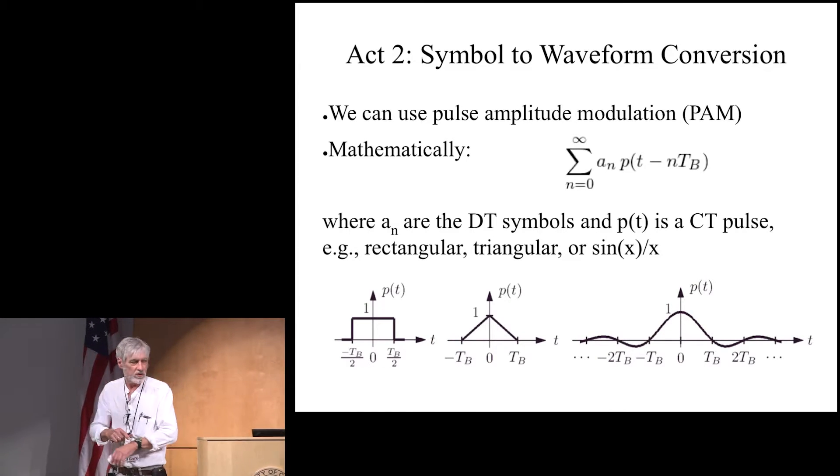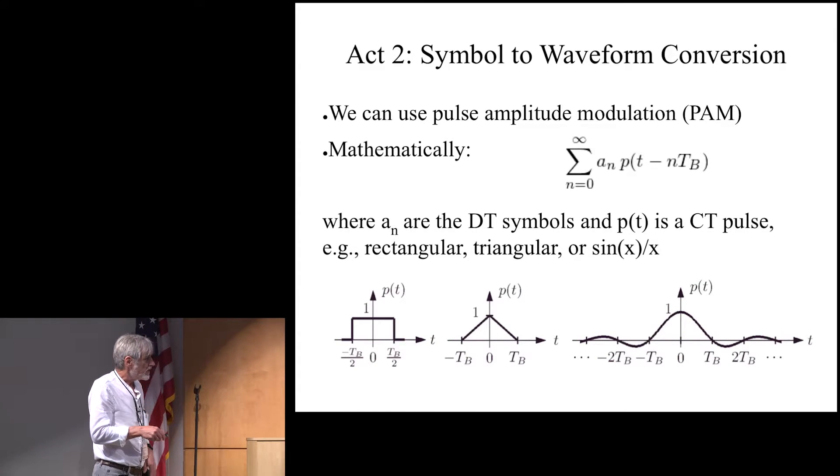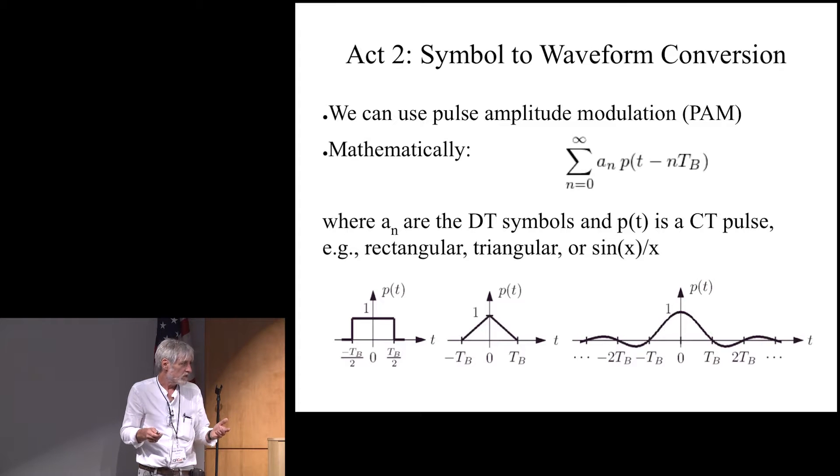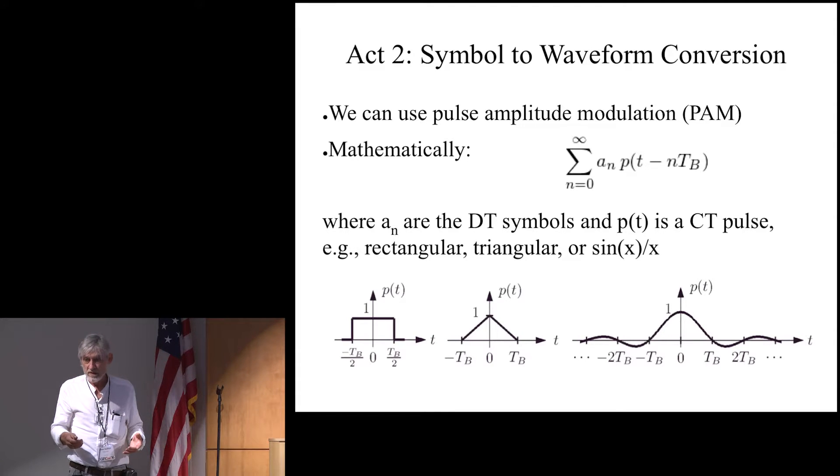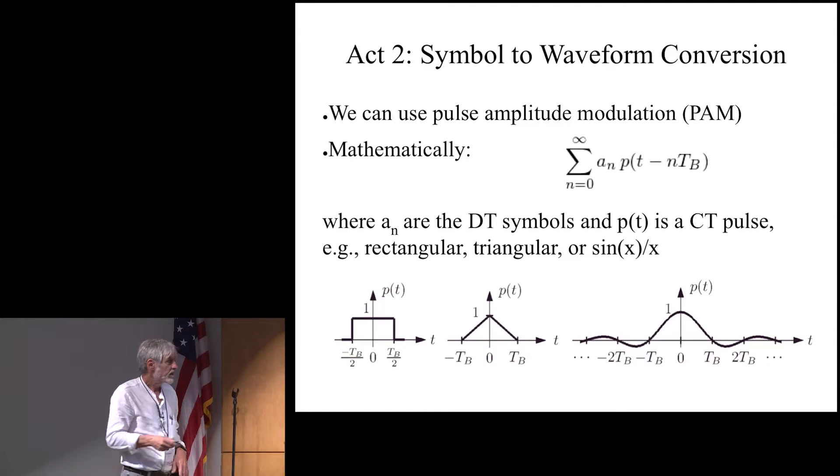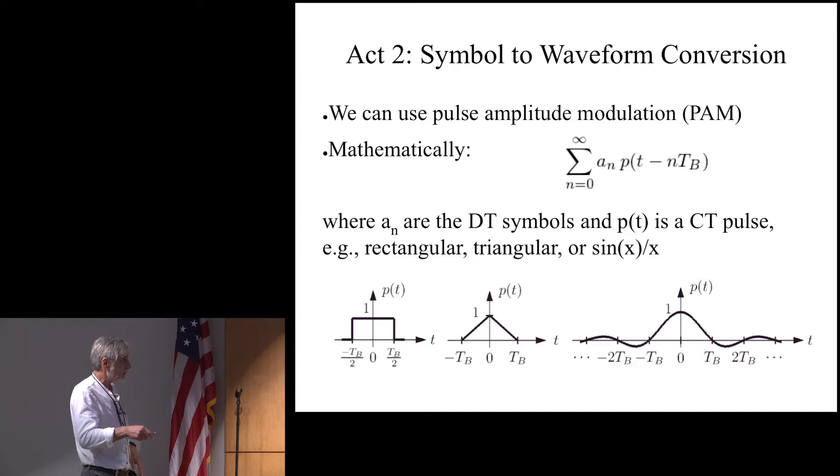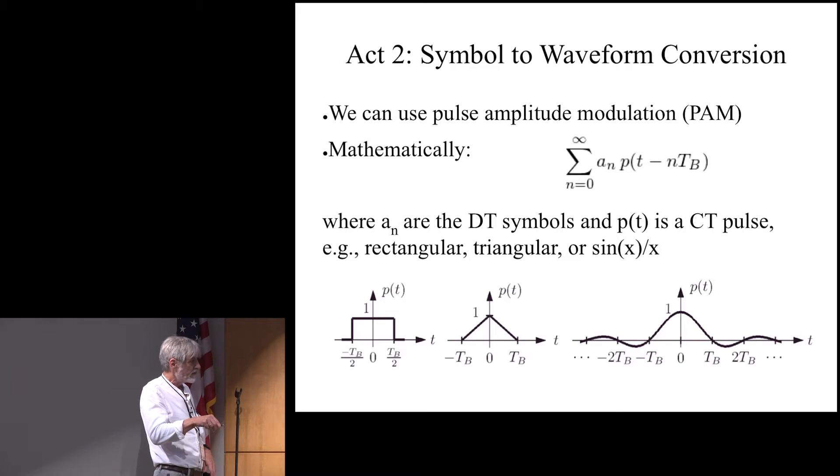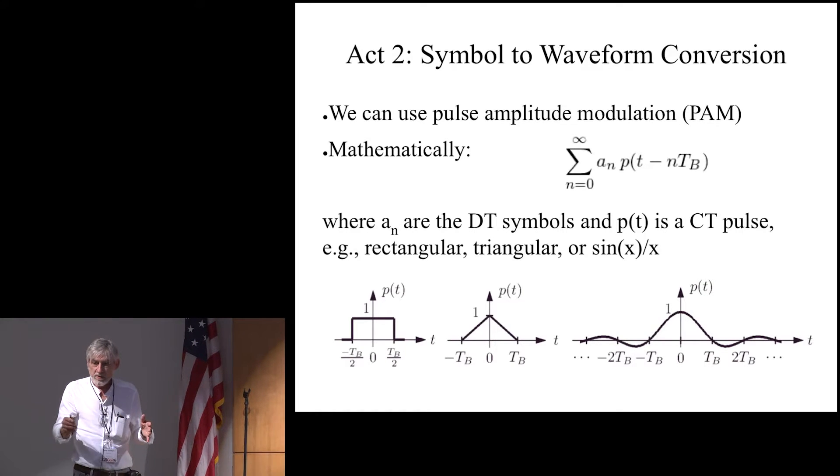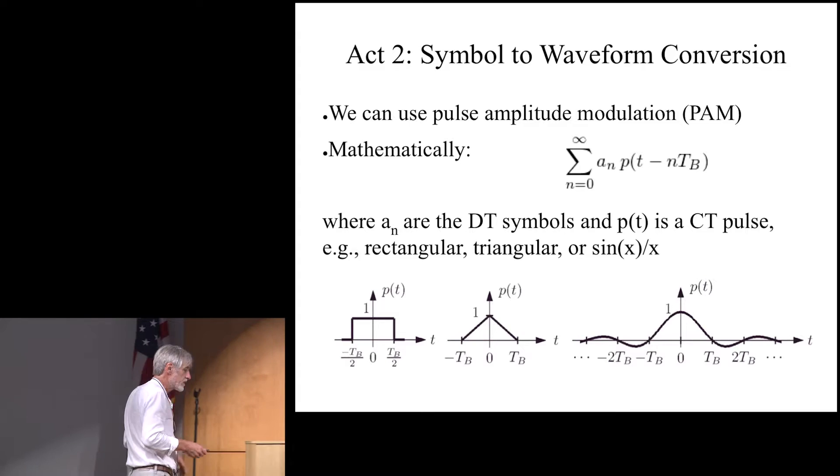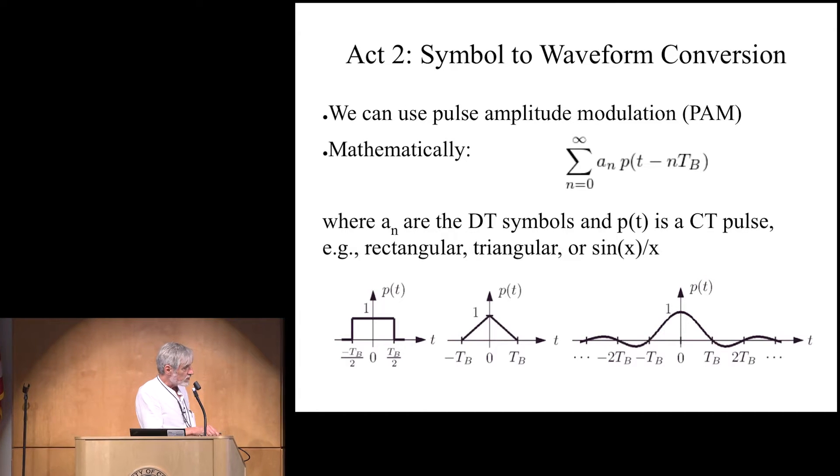Okay, now the next step is to actually make continuous time signals. All, pretty much all practical channels, they are analog in nature and not digital, certainly not discrete time. And so we are making pulse amplitude modulation. This is the formula for that. So here we start getting into the mathematics of it. Different pulse shapes like rectangular pulse, triangular pulse, sine x over x type pulse. Those pulses, of course, are going to have different spectra.